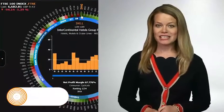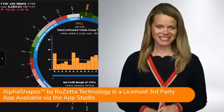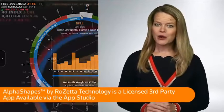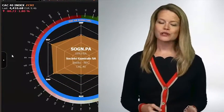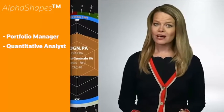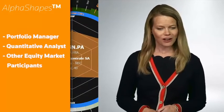Alpha Shapes by Rosetta Technologies is a unique visualization tool for analyzing the relative value of constituents in global equity indices. It lets you compare stocks visually without having to collate multiple reports, calculate ratios, create spreadsheets, or construct league tables. This app is designed for portfolio managers, quants, and anyone else analyzing stocks based on fundamentals and market data.